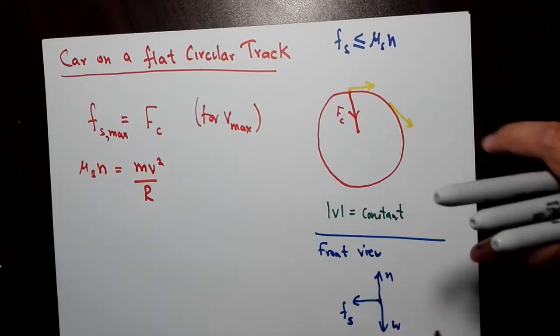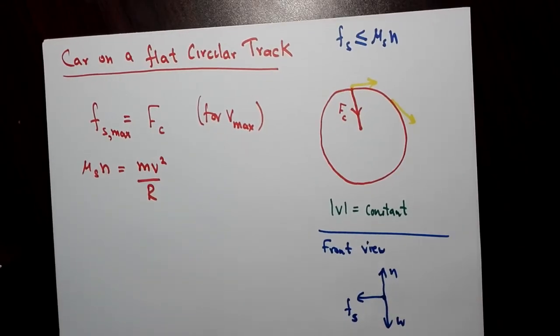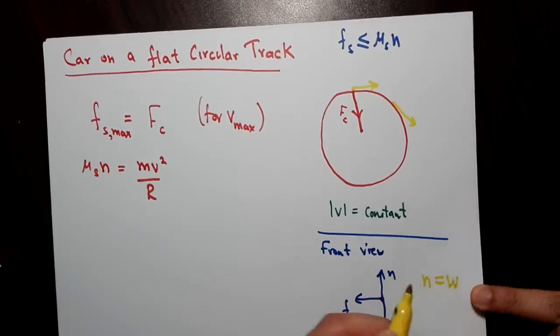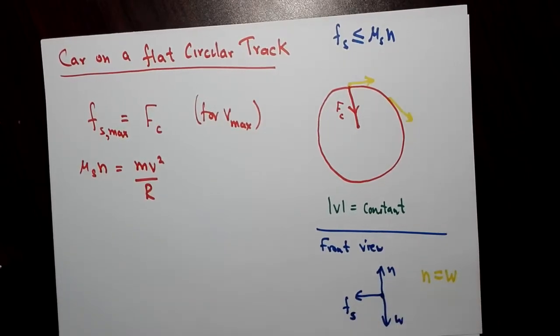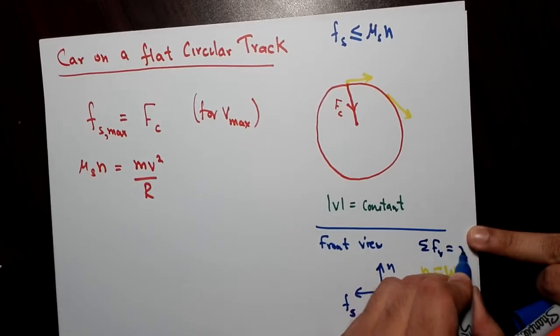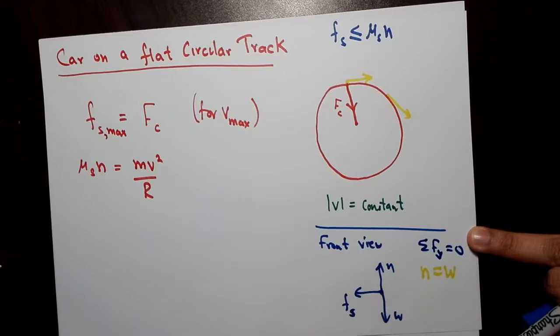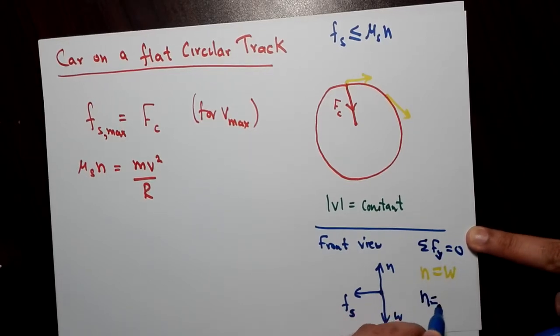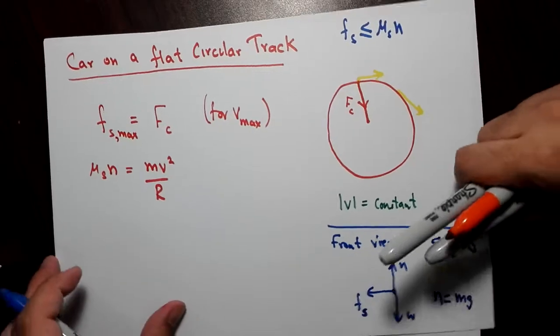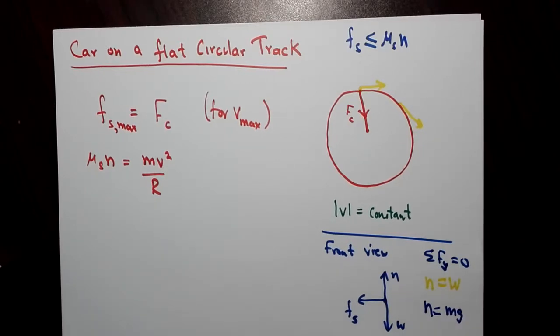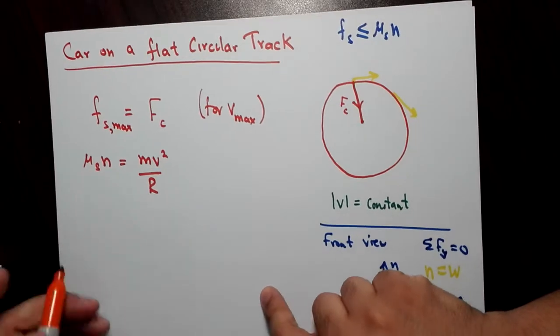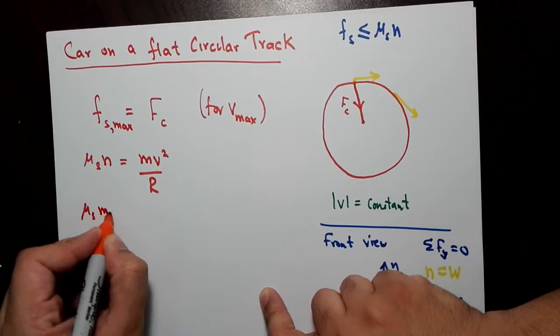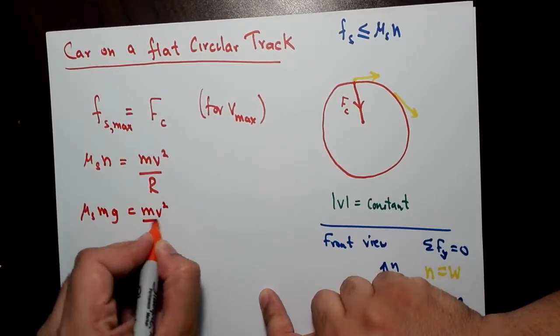Now, normal force, the net force in the y direction is 0, so you get N equals W, so N is equal to Mg. So that's your normal force. So now we can plug the normal force equal Mg over here. So you get μs times Mg equals Mv² over R.